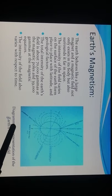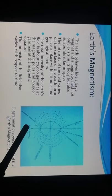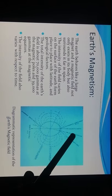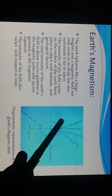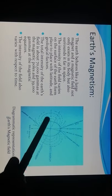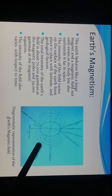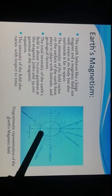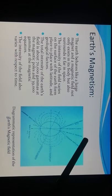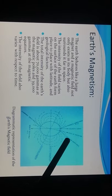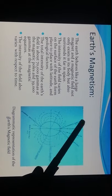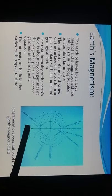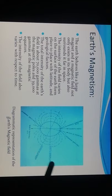This is the diagrammatic representation of the earth's magnetic field. It shows the magnetic south pole, the magnetic north pole, the magnetic equator, the geographic equator, the axial axis of rotation, the geographic north pole, and the geographic south pole. This is the actual structure of the earth's magnetic field.